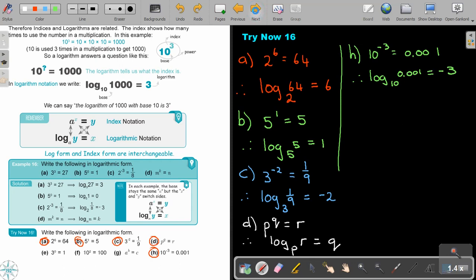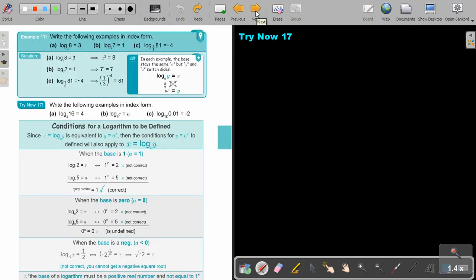Let's look at the next one. Now in this example, we are going to do the reverse. I give you log and you go to index. This is very important. What you do is you keep the base and you just swap. I want you to stop the video and I want you to do A, B, and C.